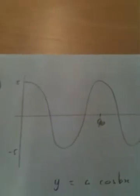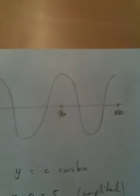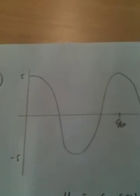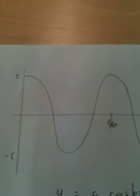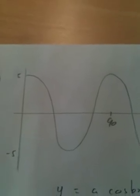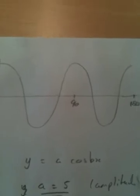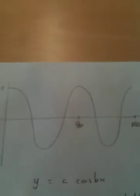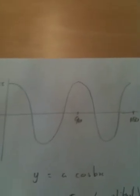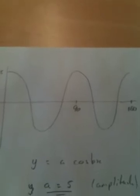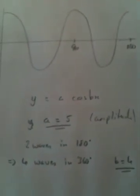Now, question number 10. We're given a graph. We are told that it's of the form I equals A cos Bx. A is just how much the graph has been stretched by. A is the amplitude. Its amplitude is 5. B is how many complete waves we would have in 360 degrees. We have 2 waves in 180. So, we would have 4 waves in 360. So, B would be 4. A is 5, B is 4.